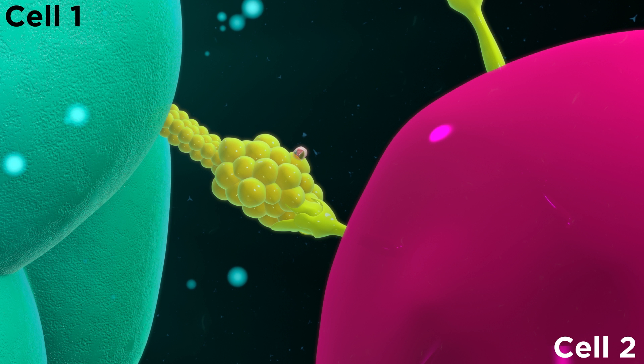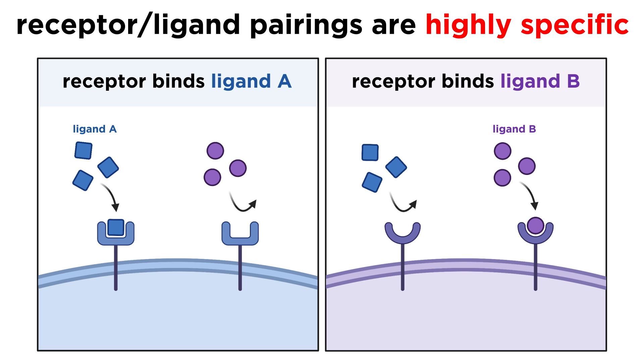Or it can be attached to the surface of another cell, meaning that the ligand-expressing cell needs to be physically close enough to the receptor-expressing cell for the ligand to bind and initiate signaling. The important thing here is that generally, receptor-ligand pairings are extremely specific.